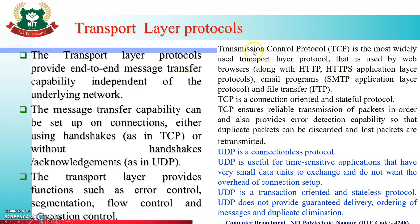TCP (Transmission Control Protocol) is the most widely used transport layer protocol, used by web browsers with HTTP and HTTPS, email programs with SMTP, and file transfer with FTP. TCP is connection-oriented and stateful, provides reliable transmission of packets in order, has error detection capability, discards duplicate packets, and retransmits lost packets. UDP (User Datagram Protocol) is a connectionless, stateless protocol useful for time-sensitive applications. It does not provide guaranteed delivery, message ordering, or duplicate elimination.